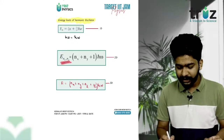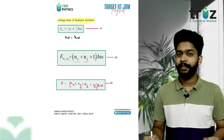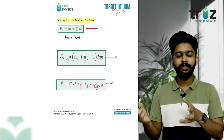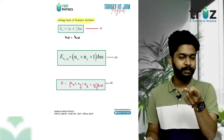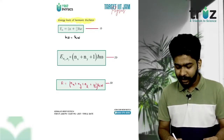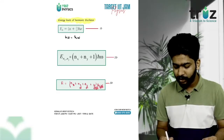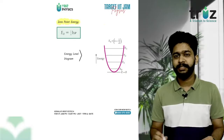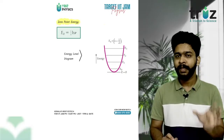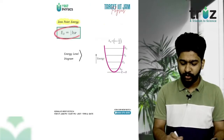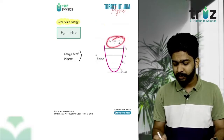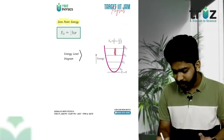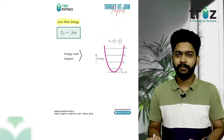For 2-dimensional harmonic oscillator, the energy is E = (n_x + n_y + 1)ħω. The minimum value is given by the ground state combination, for example (1,0) or (1,2). For 3-dimensional harmonic oscillator, the energy is E = (n_x + n_y + n_z + 3/2)ħω.